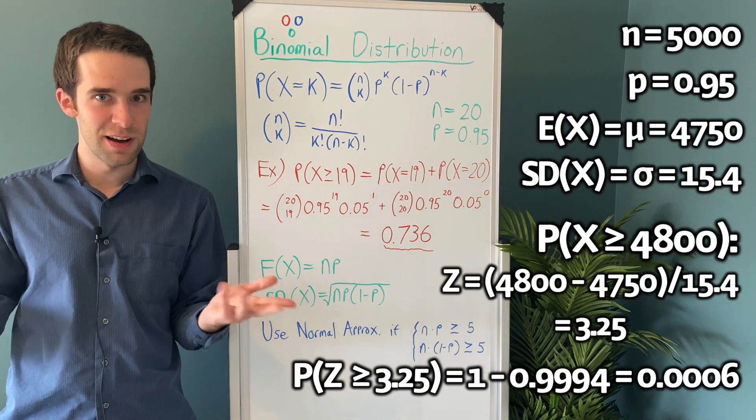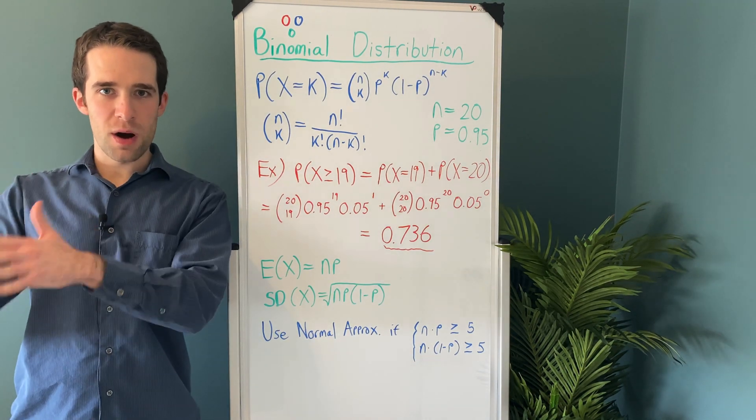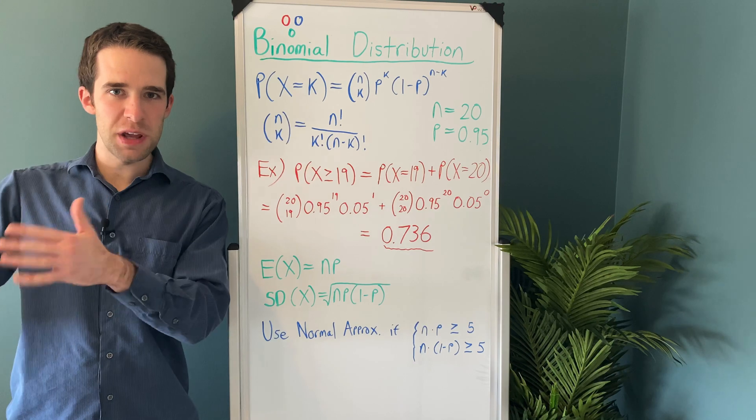I know, pretty morbid, right? So that wraps up how to use the binomial distribution as well as the normal approximation in order to do probability calculations.